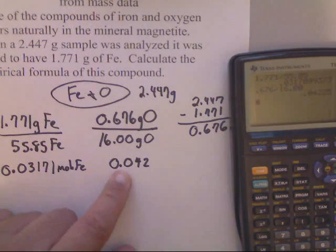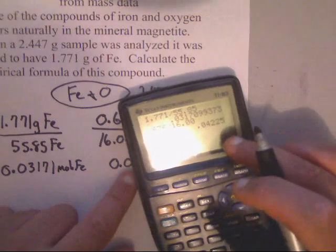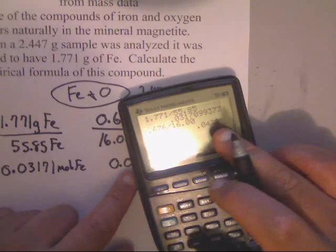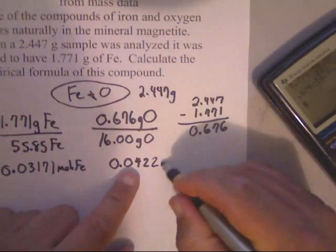And the sig fig rules of rounding is that that should still stay a two because it's even. If the number to the right is a five, it stays even. So, two. And that's going to be moles of oxygen.